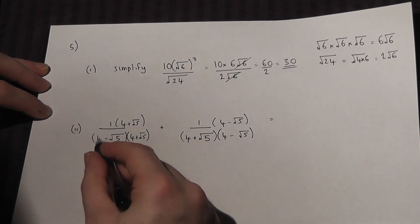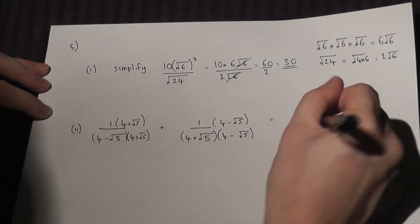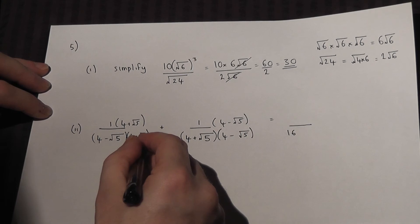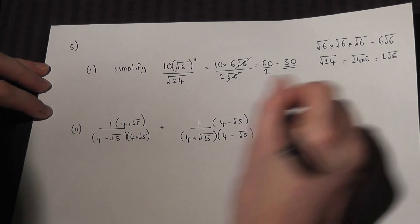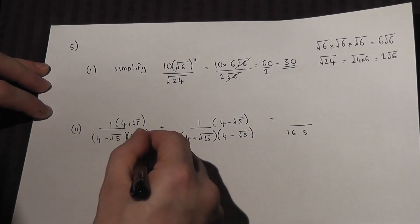Now then, 4 times 4 is 16. Root 5 times root 5 is 5, with a negative. The other two parts will cancel off.